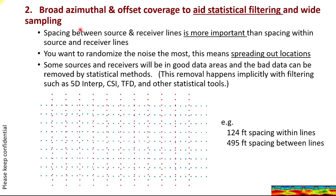Here we look at acquisition approach number two: broad azimuthal and offset coverage to aid statistical filtering. Tight spacing between your lines is more important than tight spacing within the lines. The idea is to randomize the noise the most by spreading out locations. Some sources and receivers will be in good data areas and others in bad data areas, and the bad data is removed by statistical methods. An example might be 124 foot spacing within the lines and 495 foot spacing between the lines.